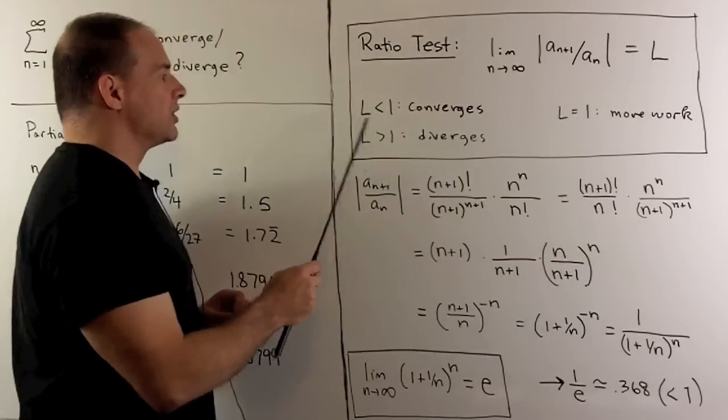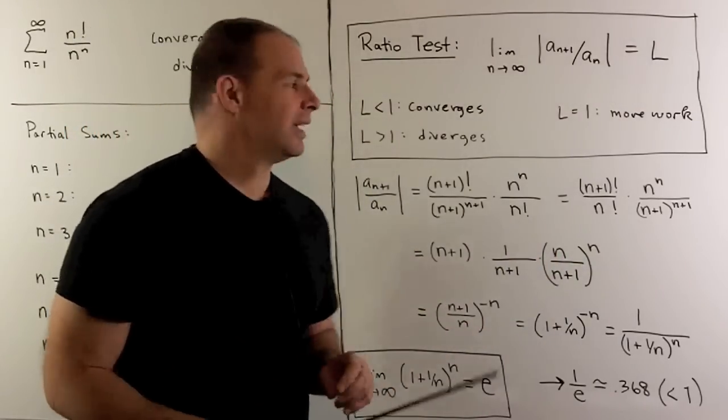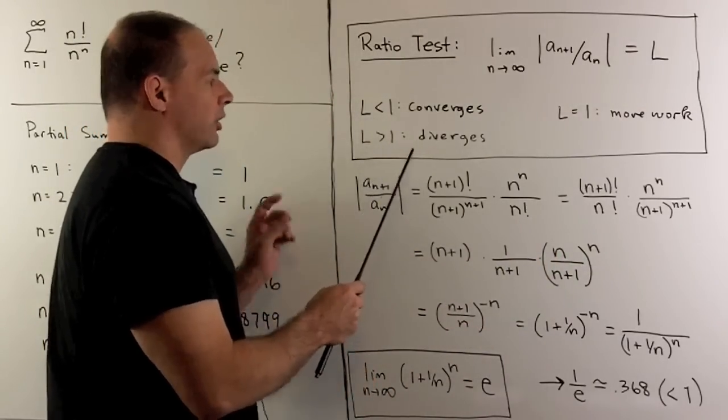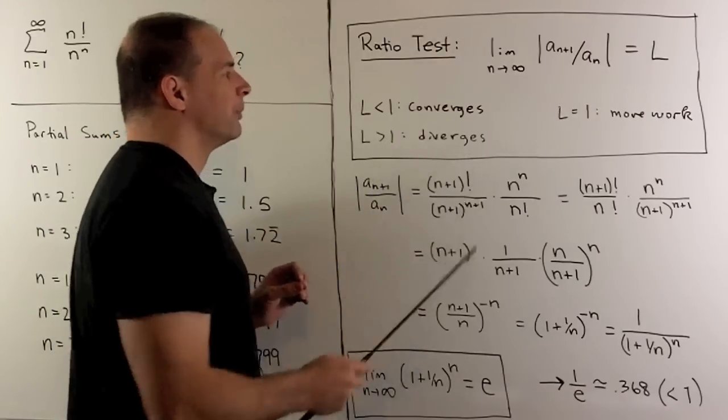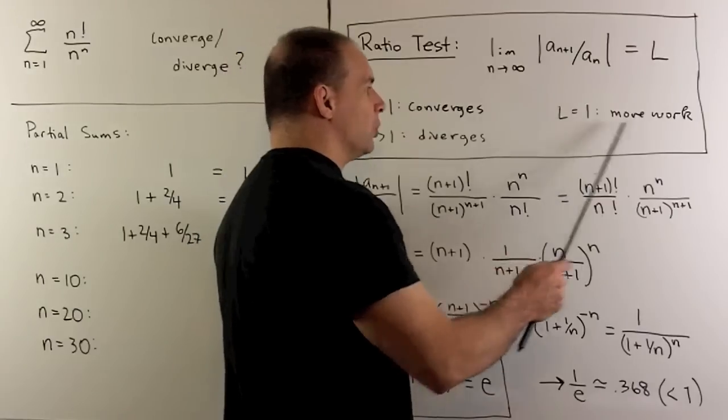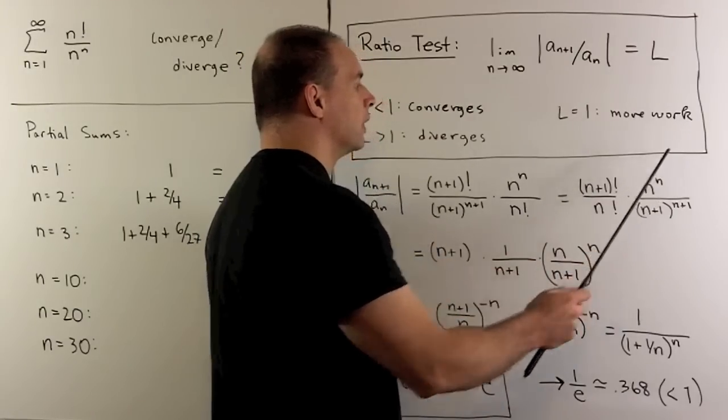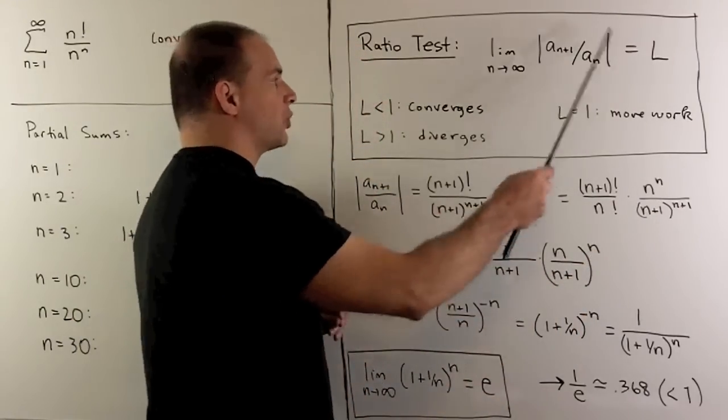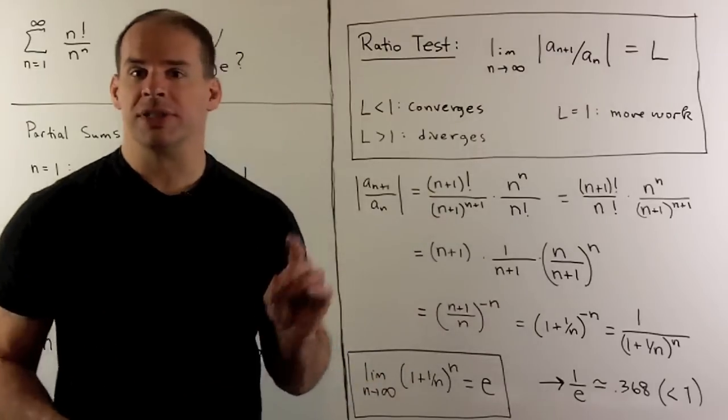Now, if L is less than 1, our series converges. If L is greater than 1, that could be infinite, that'll diverge. And if L is equal to 1, we need to do more work. So, we're just going to set this term up here, follow our nose, and see what comes out.